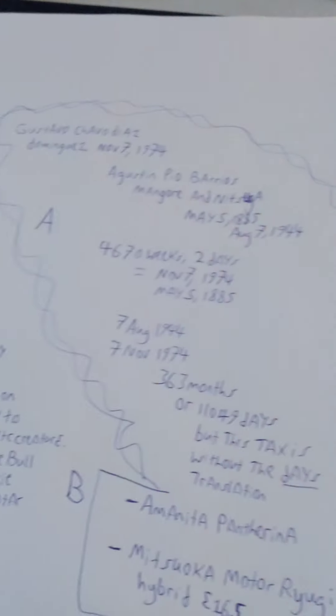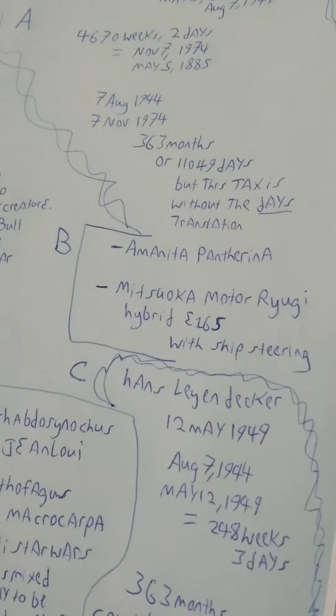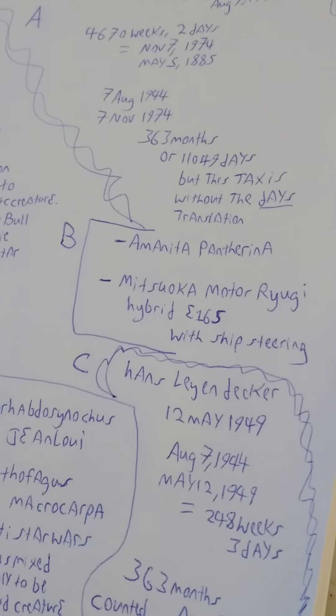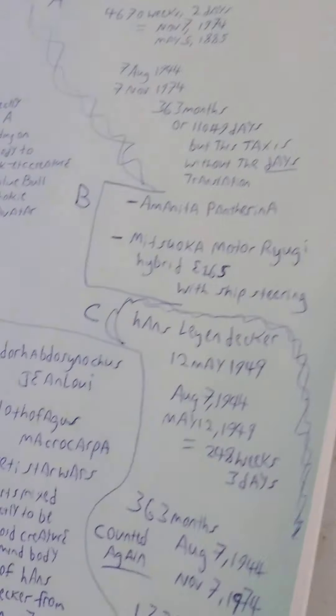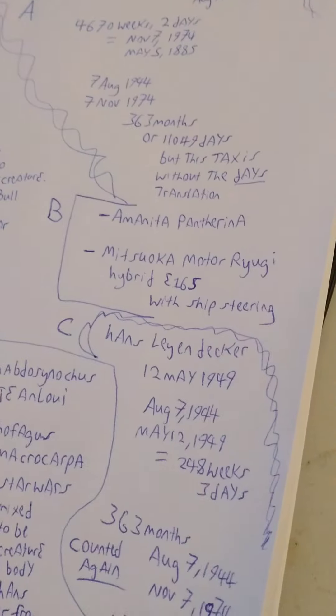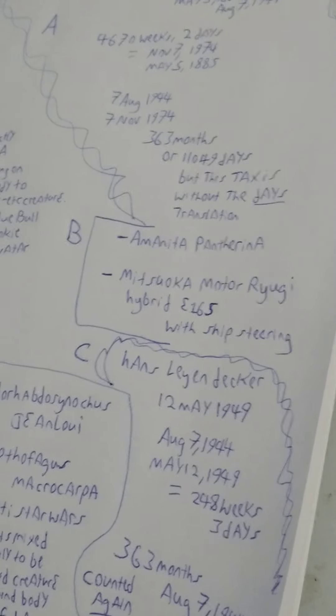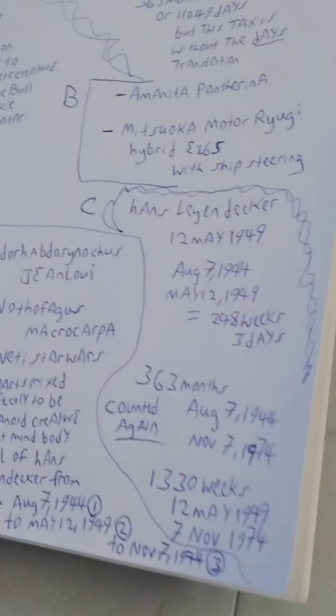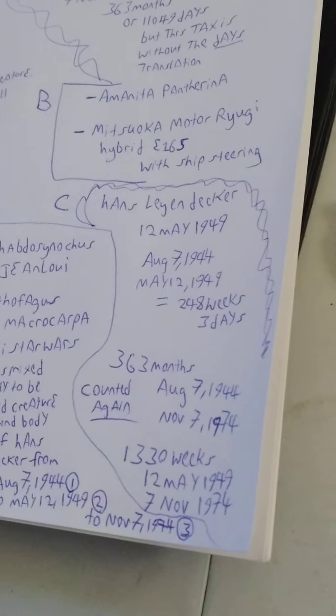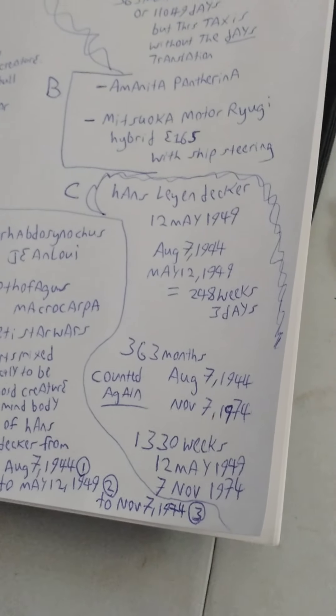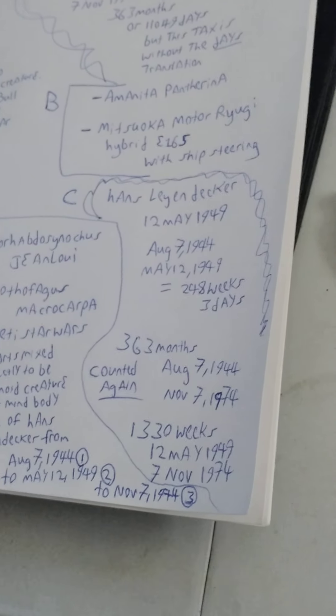Now B is Amanita pantherina and Mitsuoka Motor Ryugi Hybrid E165 with ship steering. The steering wheel is like a boat, an old boat like in Pirates of the Caribbean. Then C, Hans Leyendecker, 12 May 1949. August 7th, 1944 to May 12th, 1949 is 248 weeks and three days.